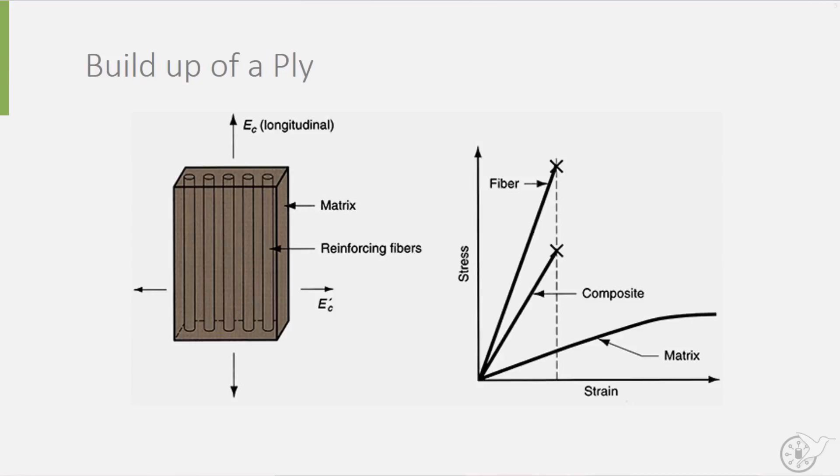The resin is often referred to as the matrix. This combination of a matrix and a sheet of woven fibers to form a material is shown here schematically, and is also known as a ply.